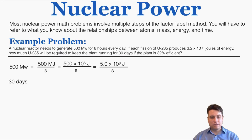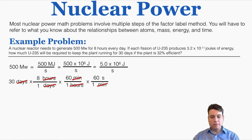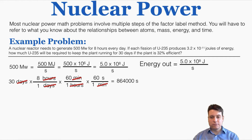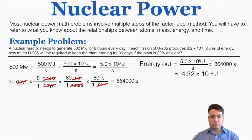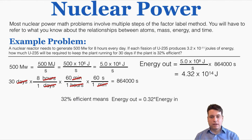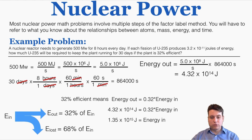We want this to run for 30 days at 8 hours every day, so we convert to total seconds: 30 days × 8 hours/day × 3600 seconds/hour = 864,000 seconds. The total energy output needed is 5 times 10 to the 8th joules per second times 864,000 seconds, which equals 4.32 times 10 to the 14th joules. Since the plant is 32% efficient, energy out equals 0.32 times energy in. Solving for energy in gives 1.35 times 10 to the 15th joules — that's how much energy must come from the uranium.